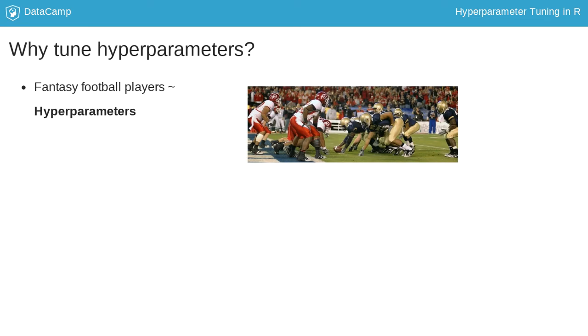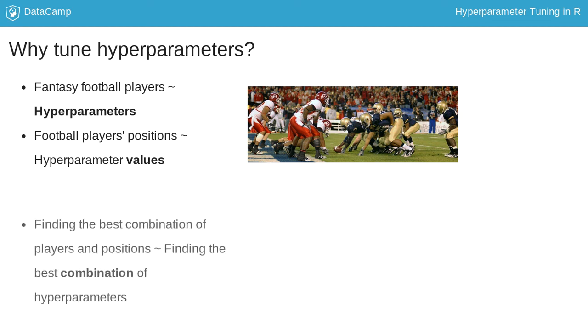But why would we want to tune hyperparameters? Imagine we are creating a fantasy football team. We want to find the best combination of players to maximize our chances of winning. In machine learning, we have hyperparameters, which we could think of like fantasy football players. Each hyperparameter can take a range of values, just as players can be assigned different positions on the field. Just like with our fantasy football team, we want to find the best combination of hyperparameters so that our model performs as well as possible. Time to put this into practice!